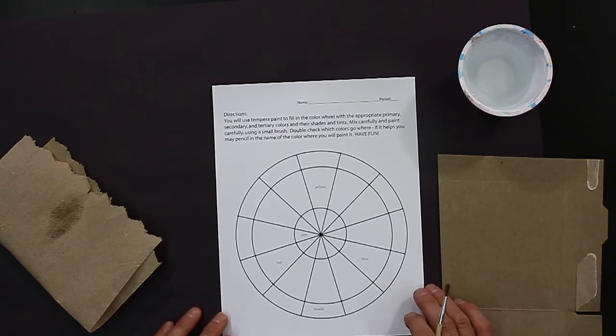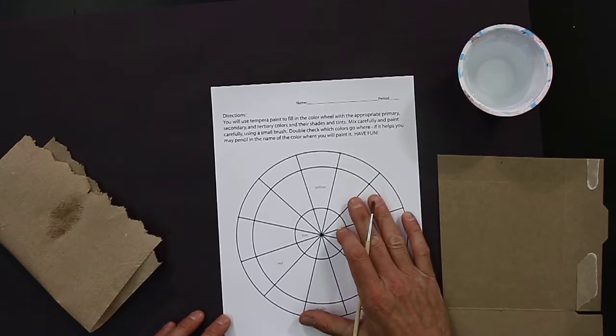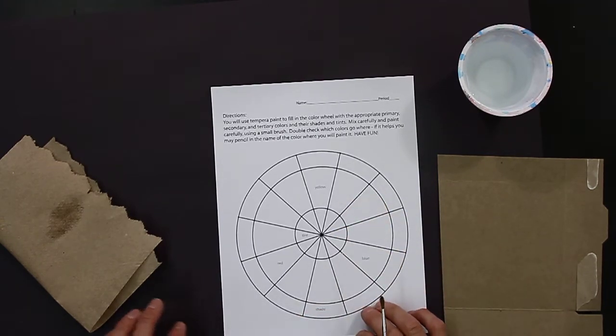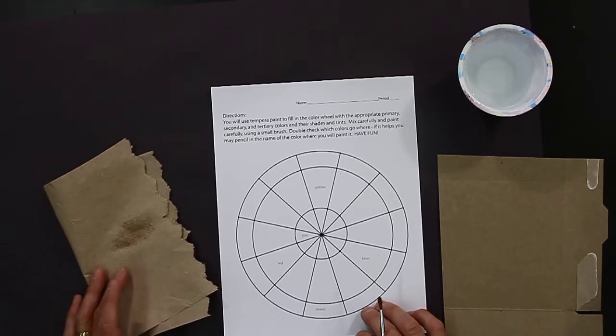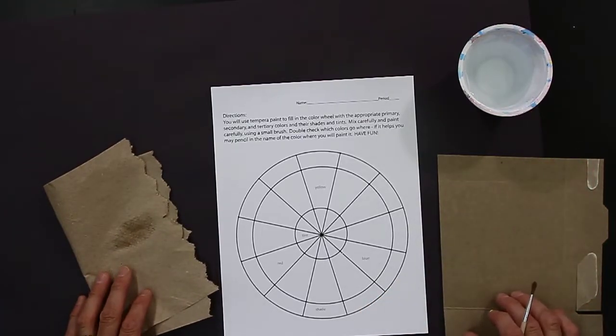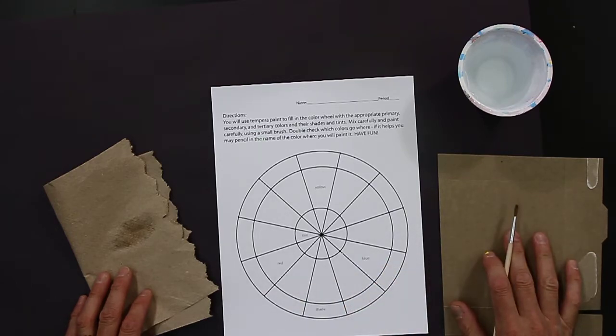When your teacher supplies you with supplies for the color wheel, you'll receive a blank color wheel and the teacher will explain where to find your other supplies including paper towel, containers to put a small amount of water in, a brush, and a palette to mix your paint on.